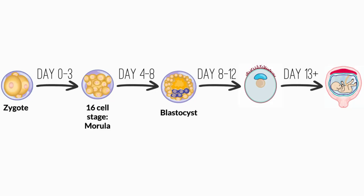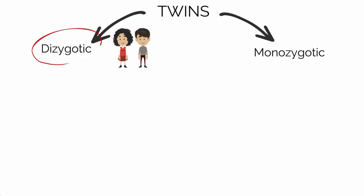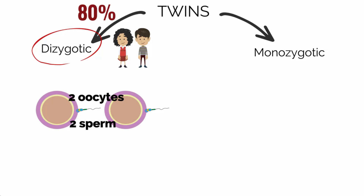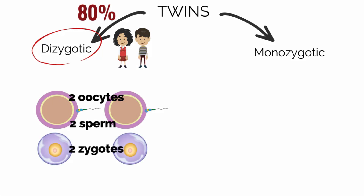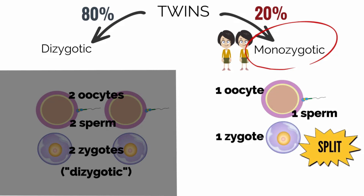With the process and terminology fresh in mind, we can dive into when and how the process of early development can lead to twins. There are both dizygotic and monozygotic twins. Dizygotic twins, which represent about 80% of twins, develop from a doubling of the entire process right from the start — two different oocytes are fertilized by two different sperm, resulting in two different zygotes. Monozygotic twins, representing about 20% of twins, arise from a single fertilization of one egg by one sperm, followed by a split of the one zygote into two zygotes.